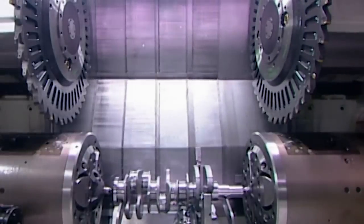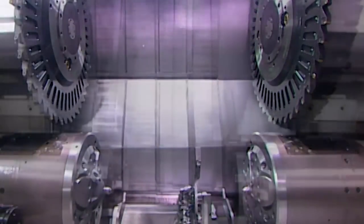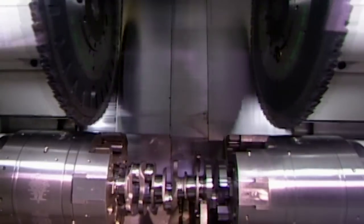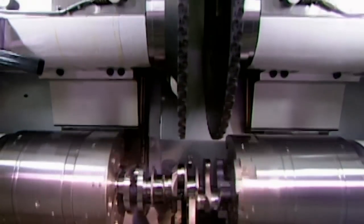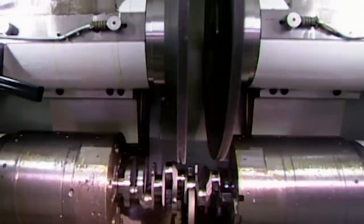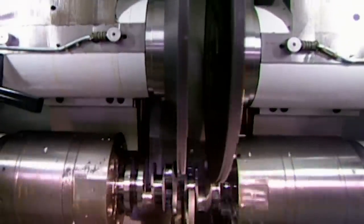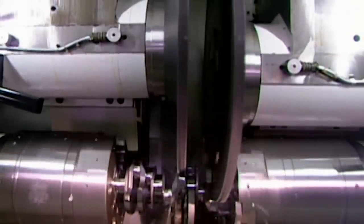Elsewhere in the factory the crankshaft is slowly taking shape. The crankshaft is a bar that's rotated by the up and down motion of the pistons. As it turns it transfers power to the transmission. The crankshaft starts out as a roughly shaped steel forging. Robotic arms pass it down the line from station to station until, 20 tooling machines later, it's fully formed.